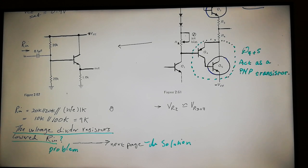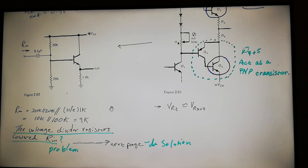Hello everybody, this is my seventh lecture of a series of lectures on transistor design and applications. The subject of today is going to be bootstrapping for the input resistance of an amplifier stage, and at the same time bootstrapping also to increase the gain of an amplifier.